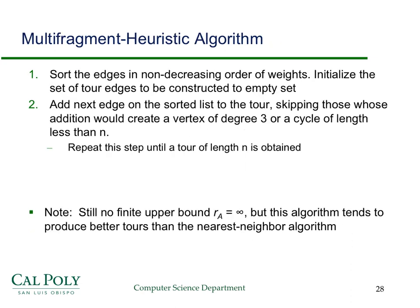Another greedy algorithm sorts edges in non-decreasing order of weight, initializes the set of tour edges to empty, and adds edges while avoiding degree-3 vertices and cycles of length less than n — similar to Kruskal's algorithm for minimum spanning trees, whereas nearest neighbor is more like Prim's. Performing this on the same example gives the same poor behavior, so again there's no finite C-approximation for this greedy approach either.